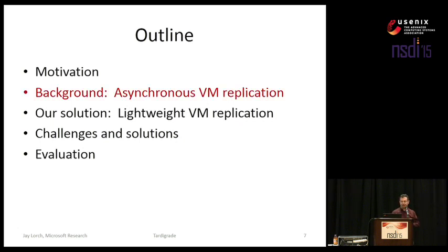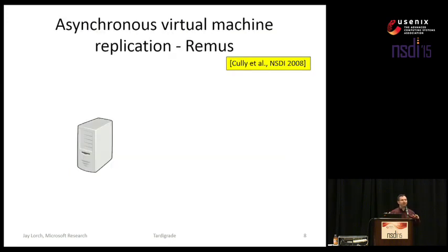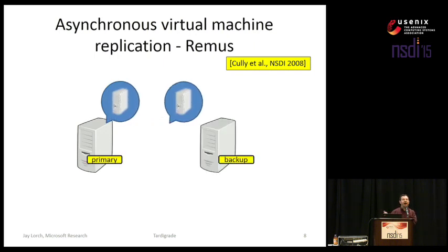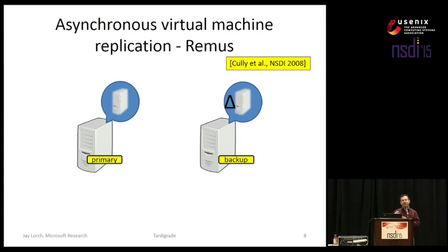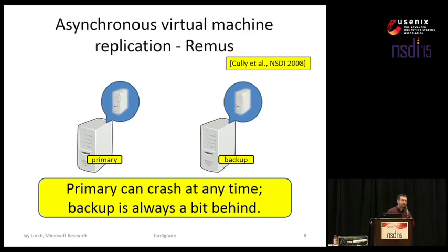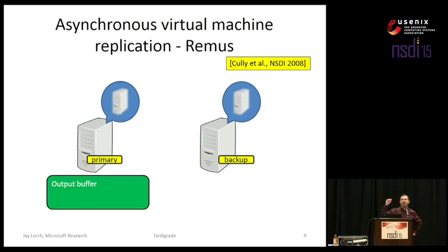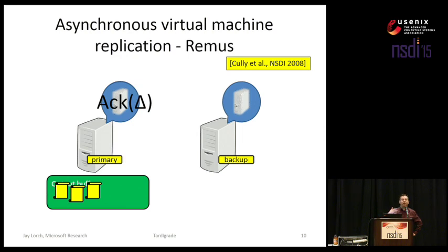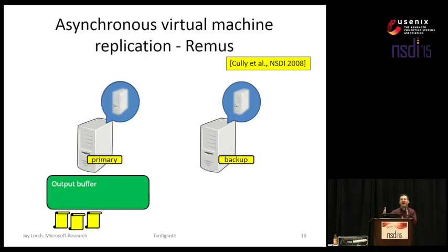It's now time for some background on asynchronous VM replication. This is work you may recall from seven years ago here at NSDI on the system called Remus, which did asynchronous VM replication. The service runs inside a virtual machine, you make a copy of that VM on a backup, and it runs alongside the service on the primary. As the primary runs, you take incremental deltas of its state and ship those over to the backup, so the backup is always a little bit behind but always ready to take over should the primary fail. To deal with that, you use an output buffer: whenever the VM tries to send a message, you block it until you receive an acknowledgement from the backup that state has been made durable. At that point, you know that state is going to survive a failover and it's safe to release any packets generated before that state.